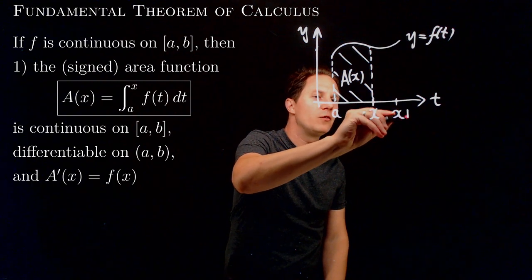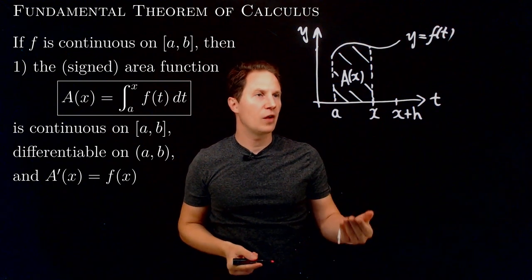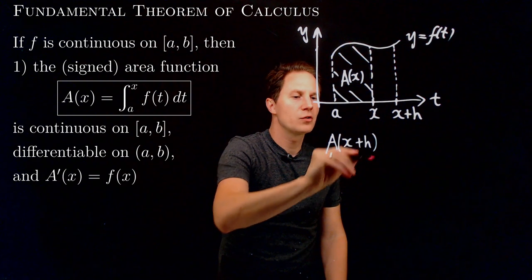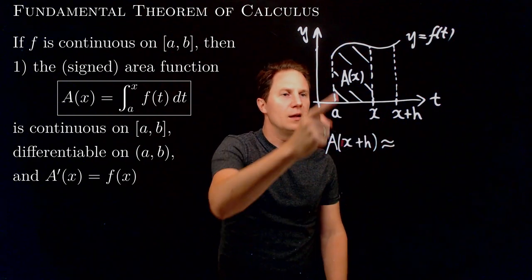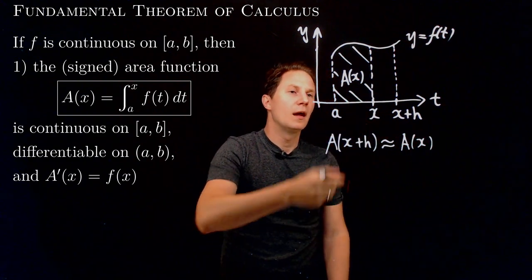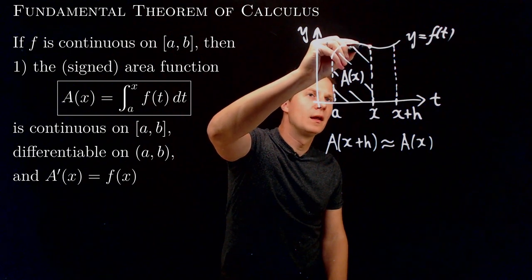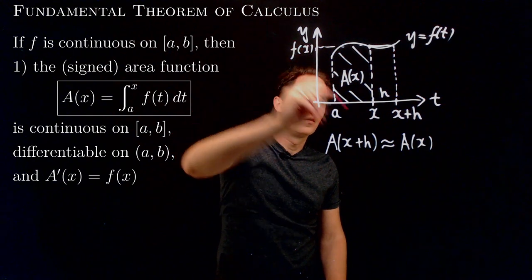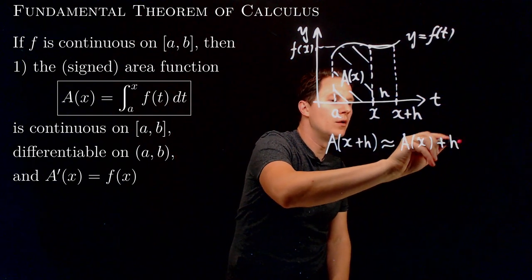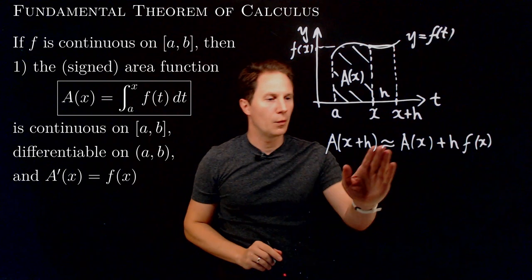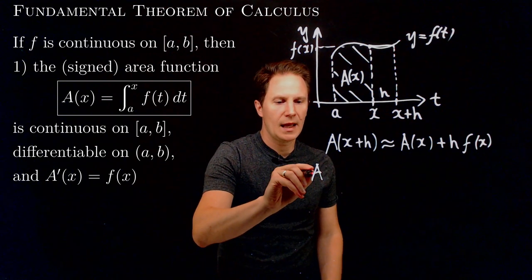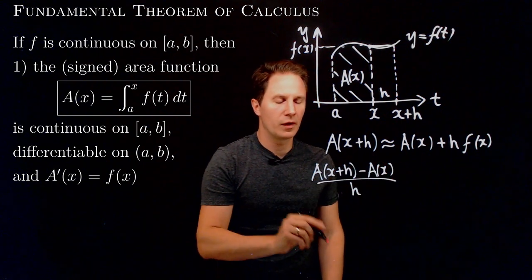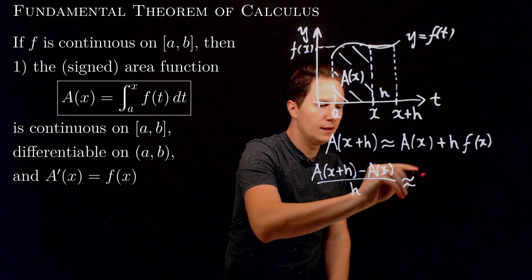So let's change it by a bit — take it to x plus h. Then this area indeed changes; it becomes A of x plus h, which is approximately the old area plus the bit that we added, which is approximately the area of that rectangle of base h and height f of x. So what we add is h times f of x. This is approximately true, so we can rearrange this: subtract A of x from both sides and divide by h to get the difference quotient of A at x being approximately f of x.